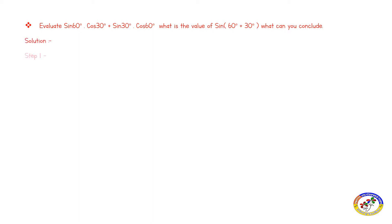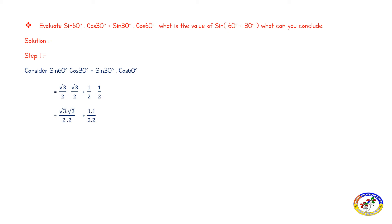Step one: sine 60 cos 30 plus sine 30 cos 60. Sine 60 value is root 3 by 2, cos 30 is root 3 by 2, plus sine 30 is half, cos 60 is half. So root 3 into root 3 over 2 into 2, plus 1 into 1 over 2 into 2. The denominator LCM is 4, numerator is 3 plus 1, so 4 by 4 which equals 1.